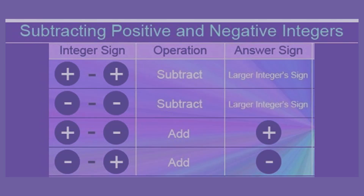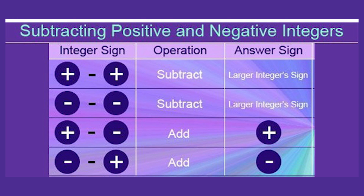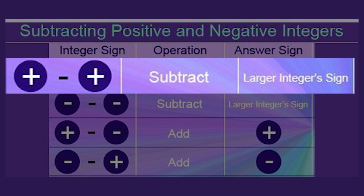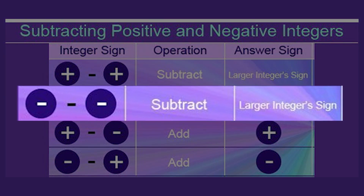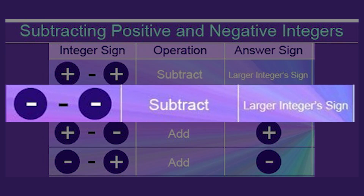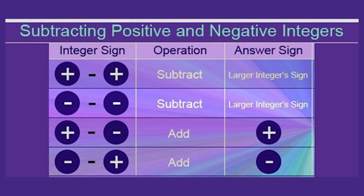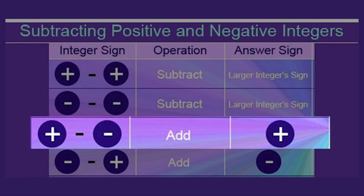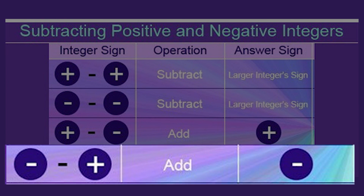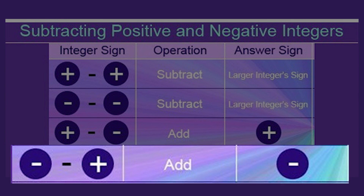Let us review the rules for subtracting integers. Rule 1: subtracting a positive number from a positive number is just normal subtraction. Rule 2: subtracting a positive number from a negative number — start at the negative number and count backwards. Rule 3: subtracting a negative number from a negative number — a minus sign followed by a negative sign turns the two signs into a plus sign. Rule 4: subtracting a negative number from a positive number — turn the subtraction sign followed by a negative sign into a plus sign.